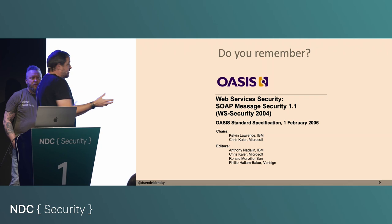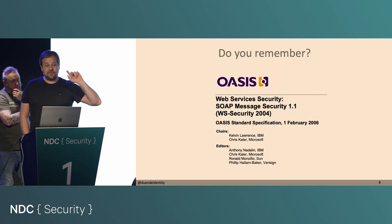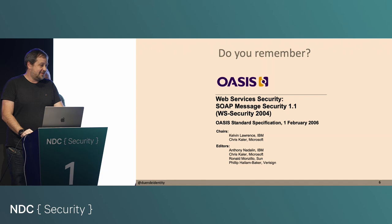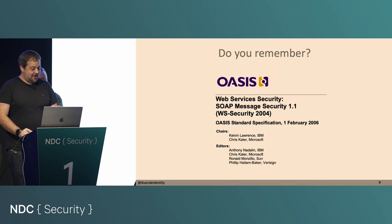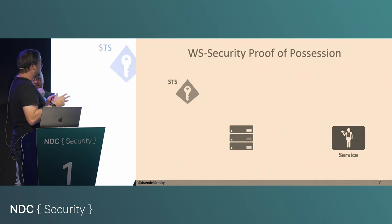Their job was to write specs to secure the enterprise. And right from the start, they assumed the enterprise needs a lot of security. Also, seeing that it's from 2004 — imagine 2004, TLS was not widely deployed, especially not in the enterprise. So their mission was to create something secure. Let me give you a quick rundown of how proof of possession worked in WS-Security.